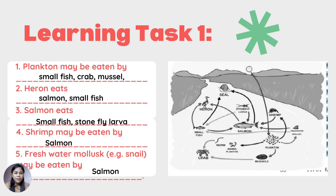These are the correct answers. Plankton may be eaten by small fish, crab, and mussel. Heron eats salmon and small fish. Number three, salmon eats small fish and stonefly larva. Number four, shrimp may be eaten by salmon. And number five, freshwater mollusk may be eaten by salmon.